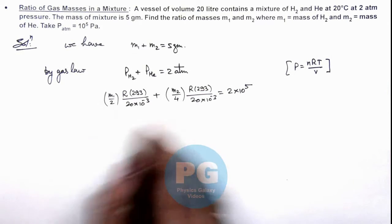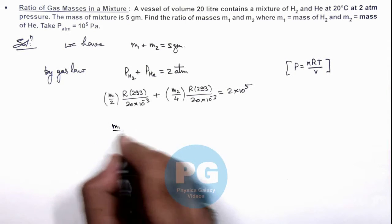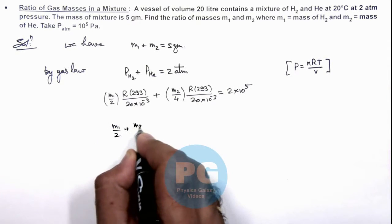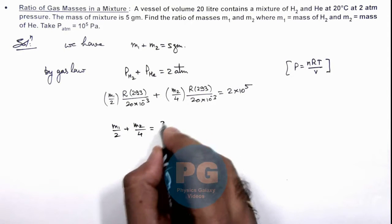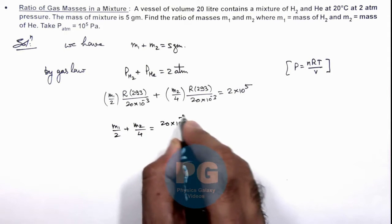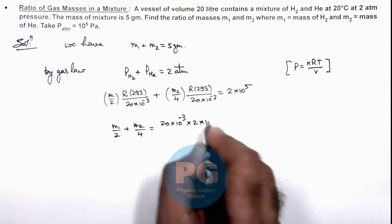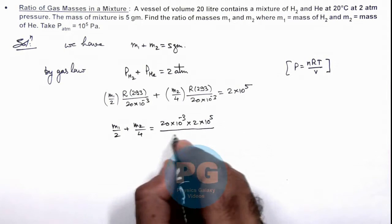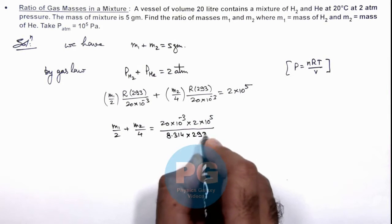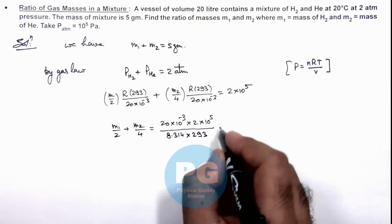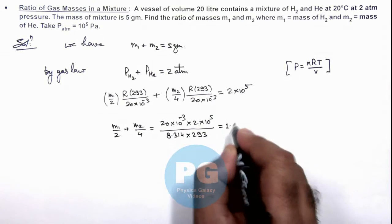On simplifying this will give us m1 by 2 plus m2 by 4 is equal to 20 into 10 to power minus 3 into 2, 2 into 10 to power 5, divided by r is 8.314 multiplied by 293. If you simplify this it gives us 1.642.